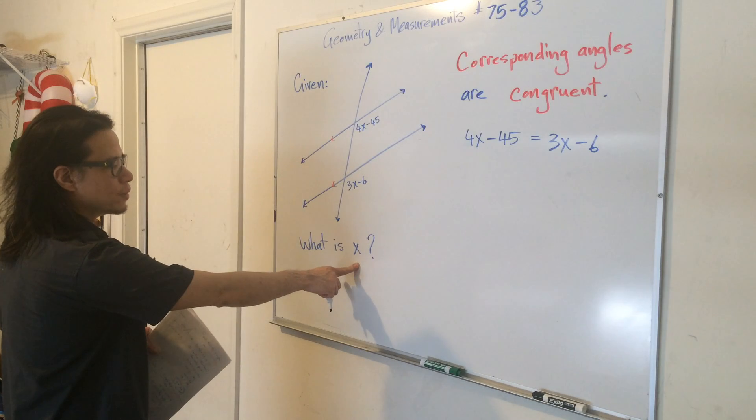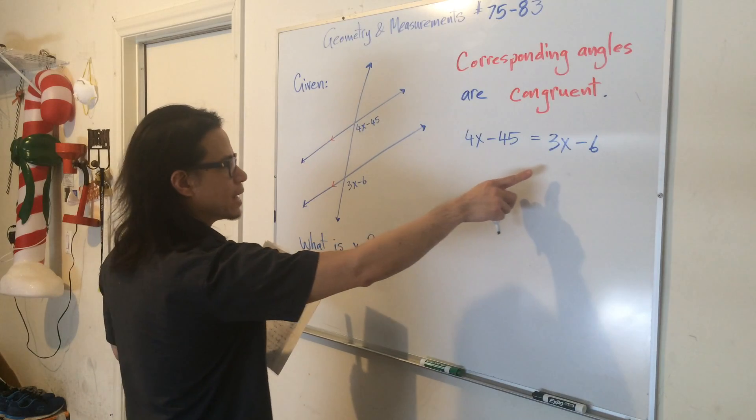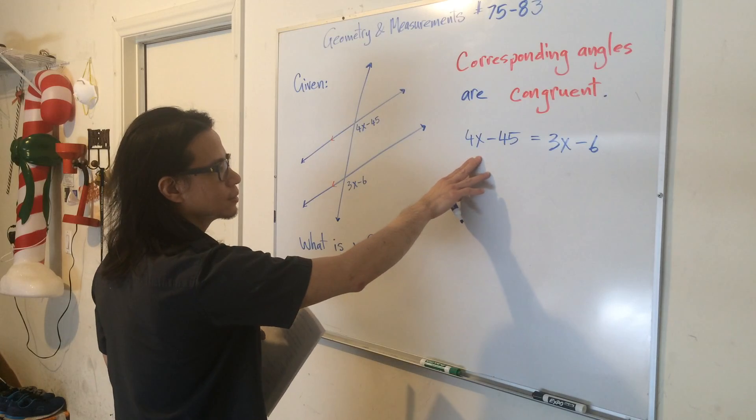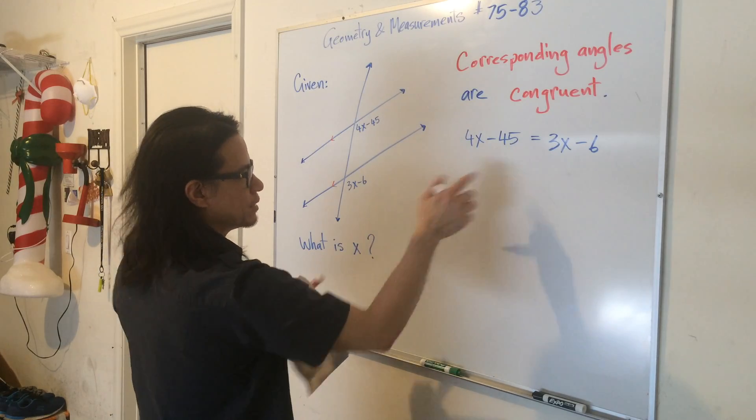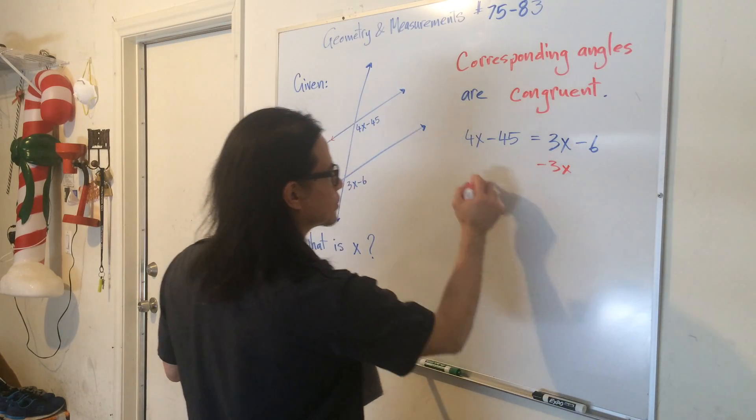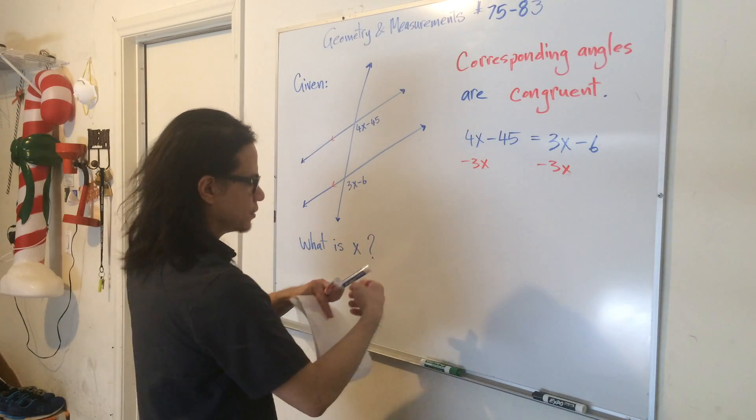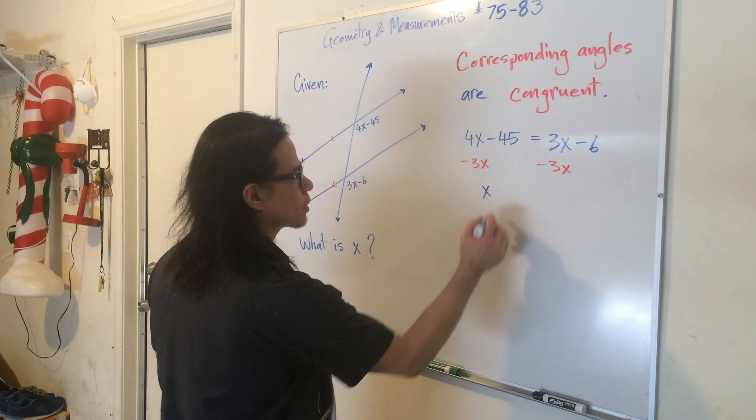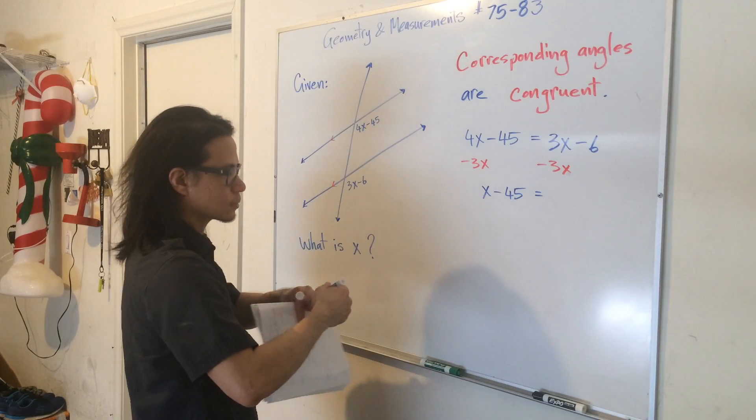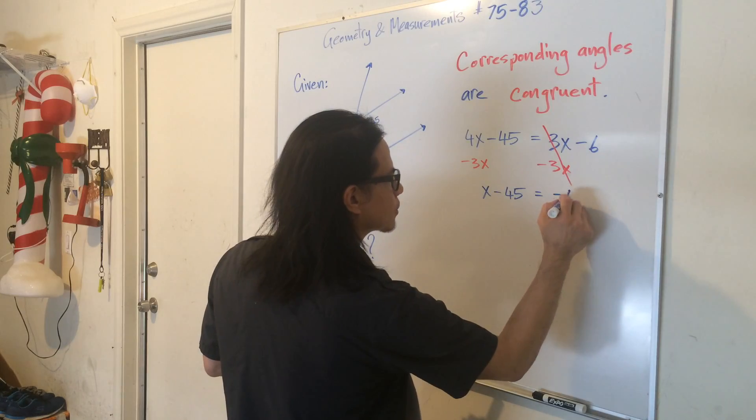Now we can solve for x. Let's get x by itself. I'm going to move the x term to the left side by subtracting it away. So let's subtract away 3x. 4x minus 3x is equal to x, and then minus 45 equals—see how this term cancels—negative 6.